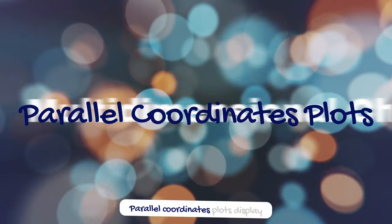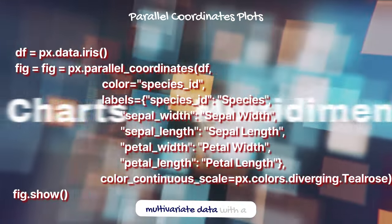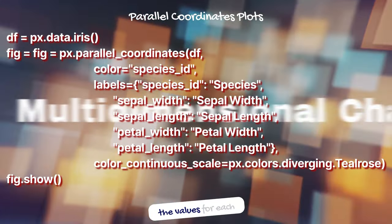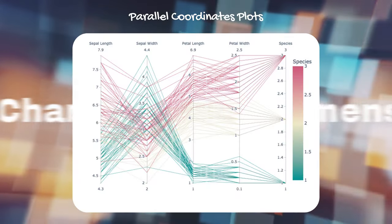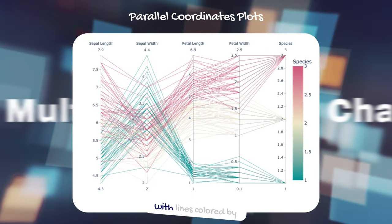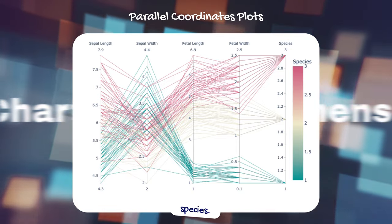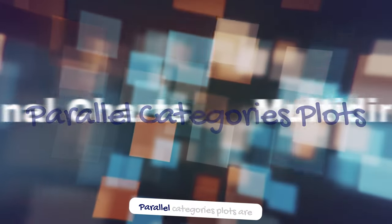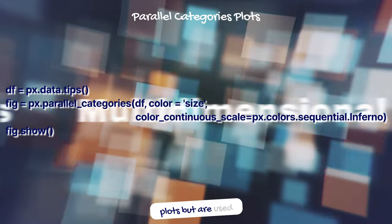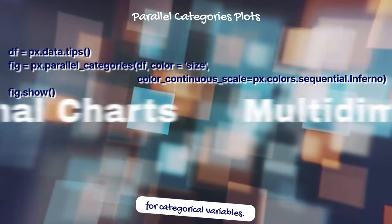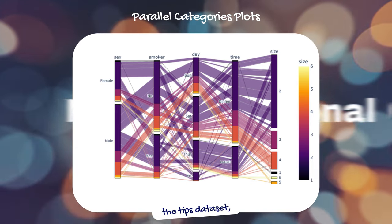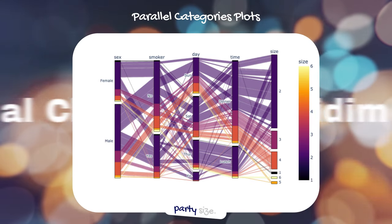Parallel coordinates plots display multivariate data with a separate axis for each variable and lines connecting the values for each observation. This code creates a parallel coordinates plot of the iris dataset, with lines colored by species. Parallel categories plots are similar but are used for categorical variables. This code creates a parallel categories plot of the TIPS dataset, with lines colored by party size.